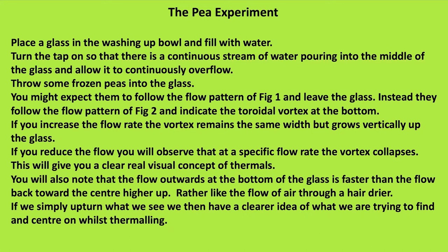The pea experiment — this isn't a prostate check. Place a glass in the washing up bowl and fill with water. Turn the tap on so there is a continuous stream of water pouring into the middle of the glass and allow it to continuously overflow. Throw some frozen peas — or frozen sweetcorn — into the glass. You might expect them to follow the flow pattern of figure 1 and leave the glass. Instead, they follow the flow pattern of figure 2 and indicate the toroidal vortex at the bottom. If you increase the flow rate, the vortex remains the same width but grows vertically up the glass. If you reduce the flow, at a specific flow rate the vortex collapses.